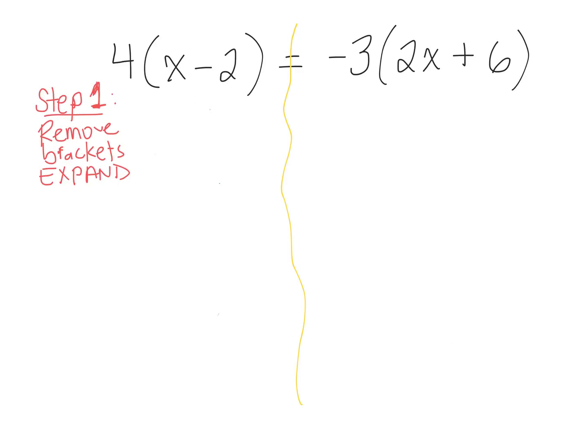So the first thing we want to do is remove the brackets and expand. So we multiply. Distribute. Distributive property. Distribute the number in front of the bracket times whatever is inside the bracket. So 4 times x, 4 times negative 2. And do I have to do the same thing on the right side? Yes. We still have brackets. So we need to expand and remove the brackets. Negative 3 times positive 2x. Negative 6. Good. Negative 3 times positive 6. Negative 18. So that's step 1.